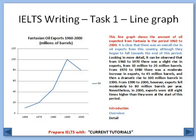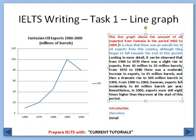An example of a line graph is this one. This line graph shows the amount of oil exported from Fantasia in the period of 1960 to 2000. This will be an introduction. It is clear that there was an overall rise in exports of this country, although they begin to fall towards the end of this period.